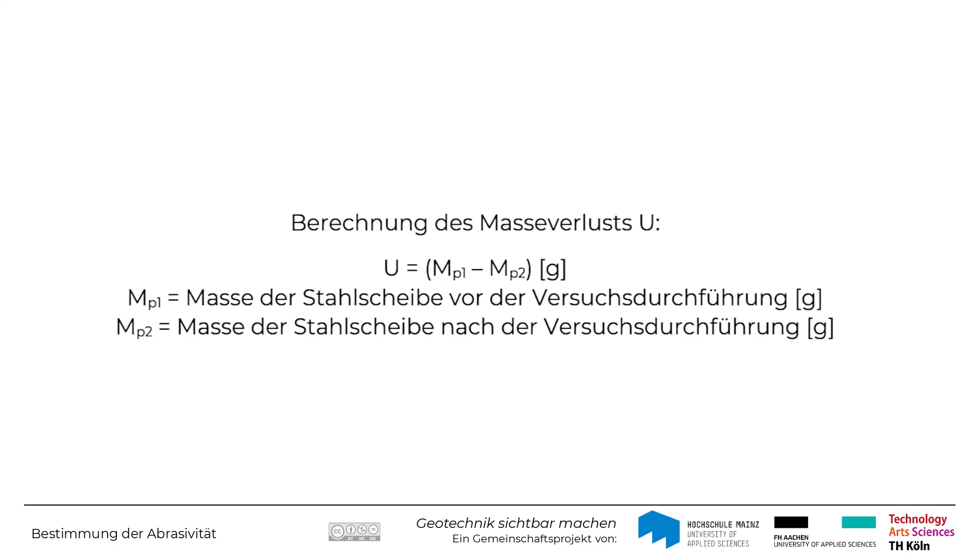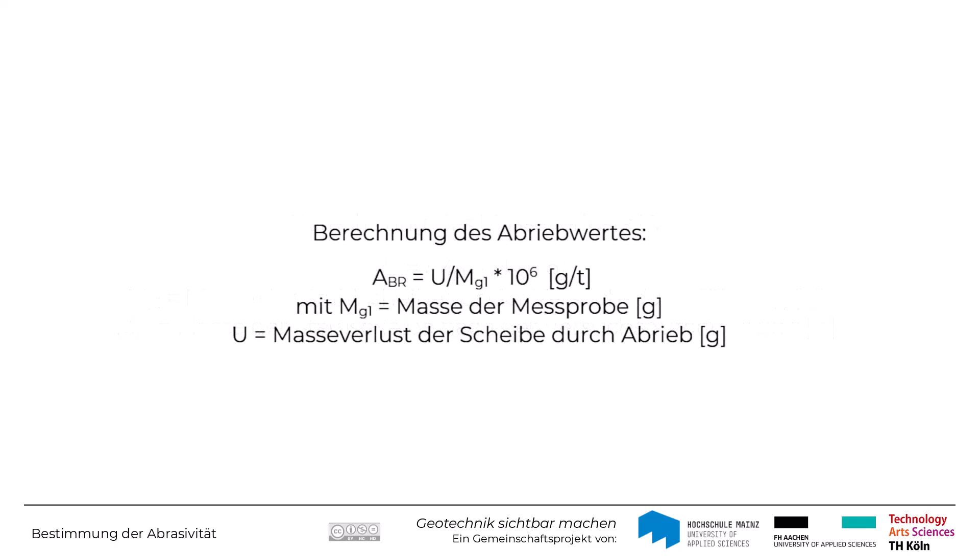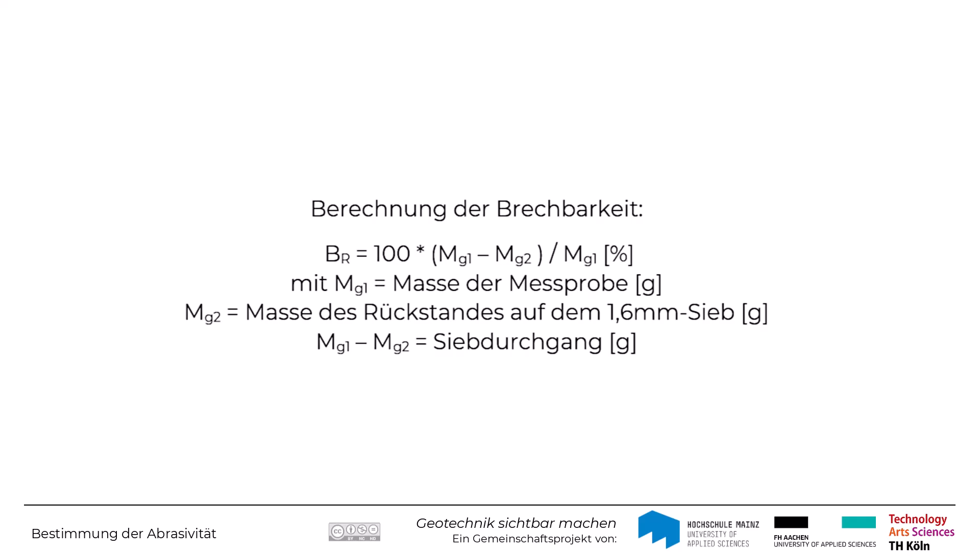Der Masseverlust des Stahlflügels wird ermittelt und auf die ursprüngliche Probenmenge von 500 Gramm bezogen. Der Masseverlust ergibt sich aus der Masse des Stahlflügels vor der Versuchsdurchführung minus der Masse nach der Versuchsdurchführung. Mittels des Massenverlustes in Gramm bezogen auf die Masse der Probe in Tonnen wird der Abriebwert ABR in Gramm pro Tonne ermittelt. Zur Bestimmung des Brechbarkeitskoeffizienten BR wird die auf dem 1,6 mm Sieb verbliebene Masse von der ursprünglichen Probenmasse abgezogen und diese Differenz auf die 500 Gramm bezogen, um BR in Prozent zu ermitteln.